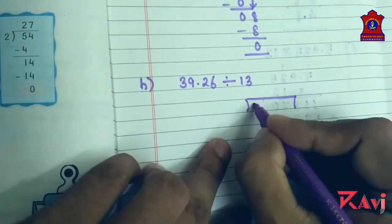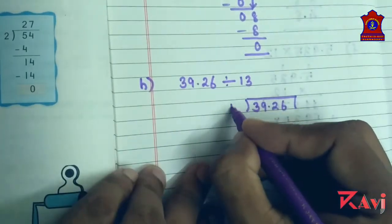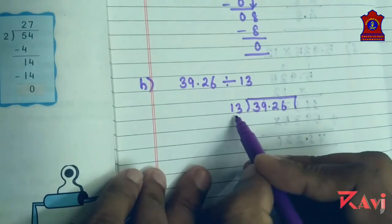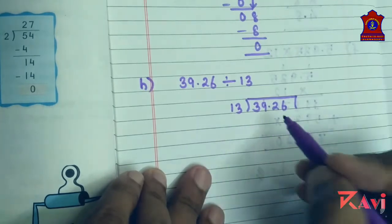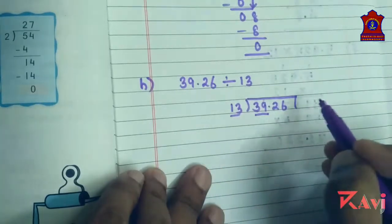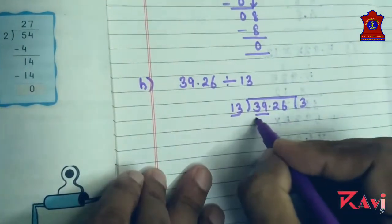39.26 divided by 13. Now see, create again a division box. Follow the same method: 39.26 divided by 13. Now see, look at 13. 13 is a 2 digit number, so start dividing a 2 digit by 13. So 13 into what makes 39? 13 threes are 39.